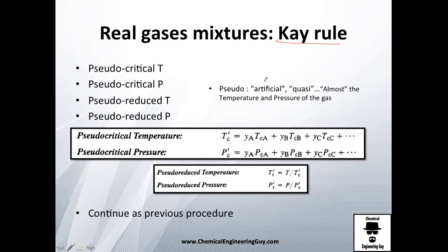So we're going to be analyzing the Kay rule, which essentially says that we can calculate pseudo-critical temperature, pseudo-critical pressure, pseudo-reduced temperature, and pseudo-reduced pressure. Pseudo means artificial, or quasi, or almost the temperature or pressure of that gas. Of course, we're talking about an approximation - this is not the exact value, but it really works. At least for engineering purposes, it really works.